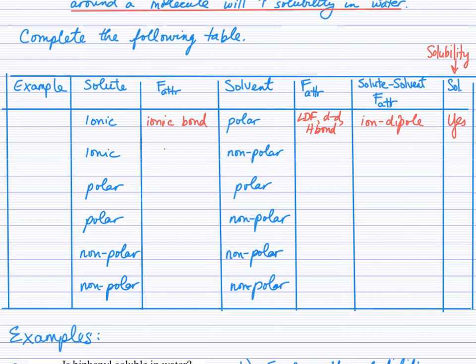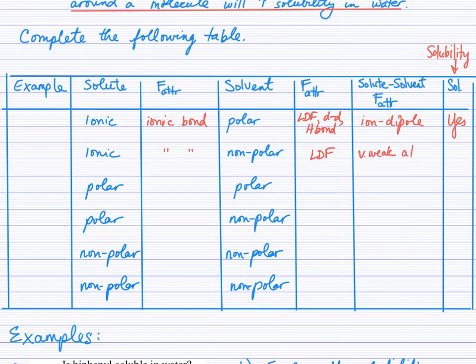For an ionic solute in a non-polar solvent: the force of attraction is still the ionic bond, but non-polar solvent molecules experience London dispersion forces between one another. The interaction between ions and non-polar molecules is very weak — ions will continue attracting ions in the solute. We see greatly decreased solubility when an ionic solute is added to a non-polar solvent, so essentially they are insoluble.